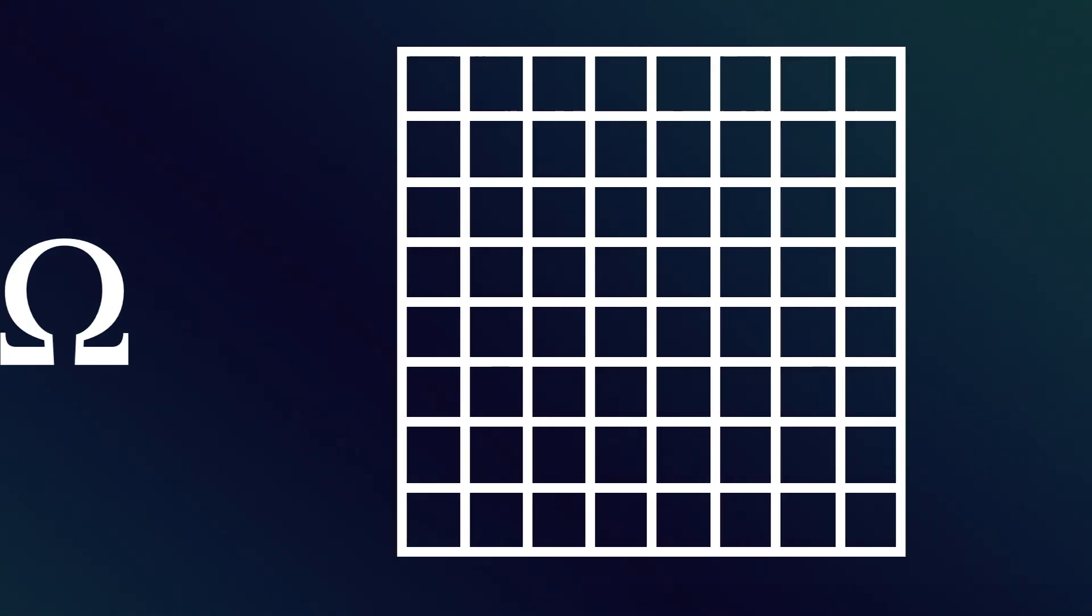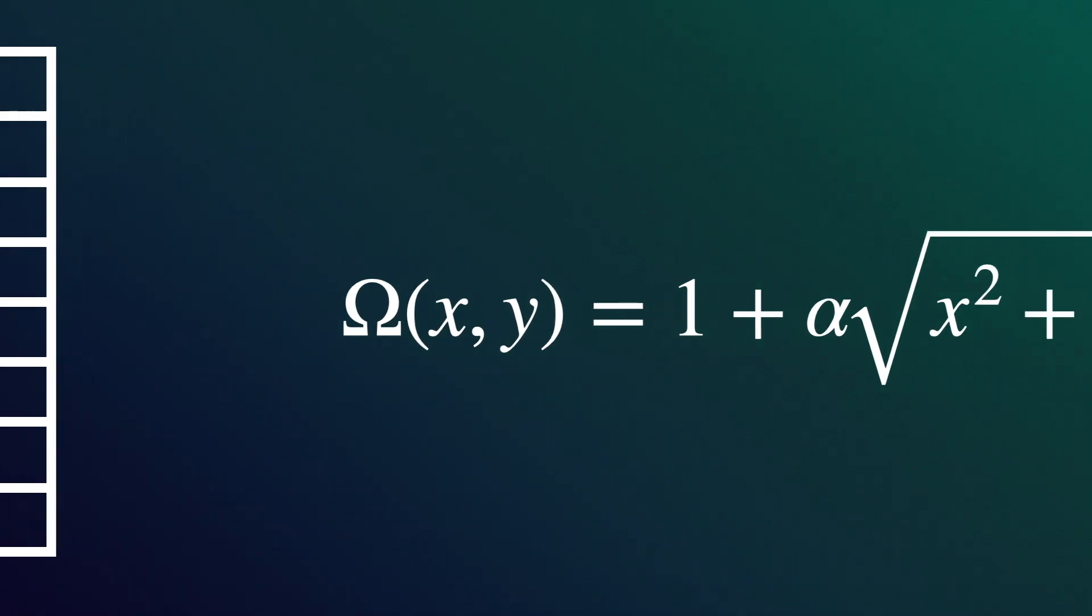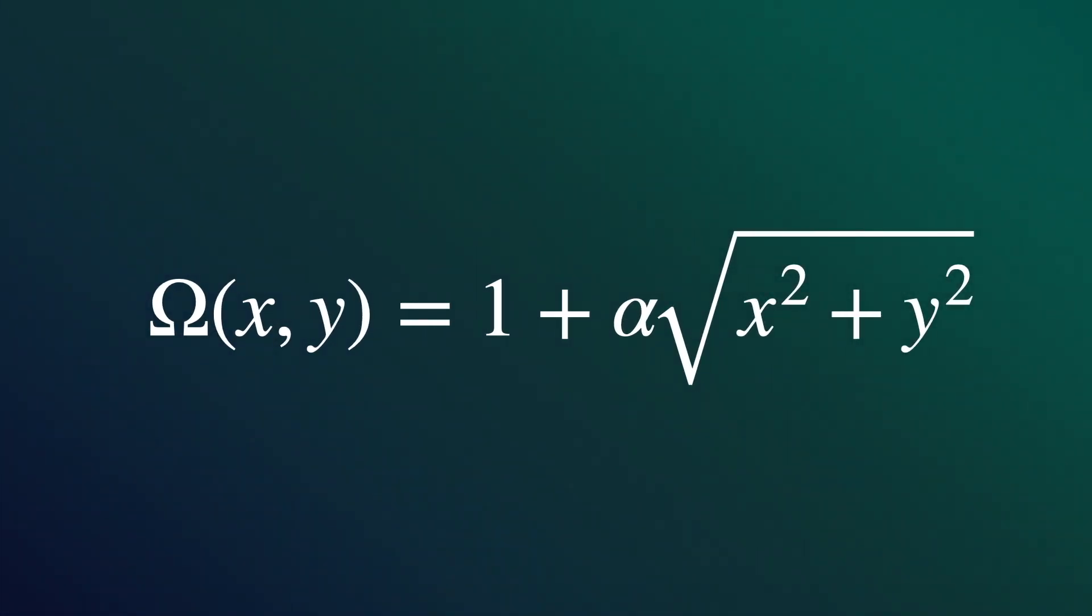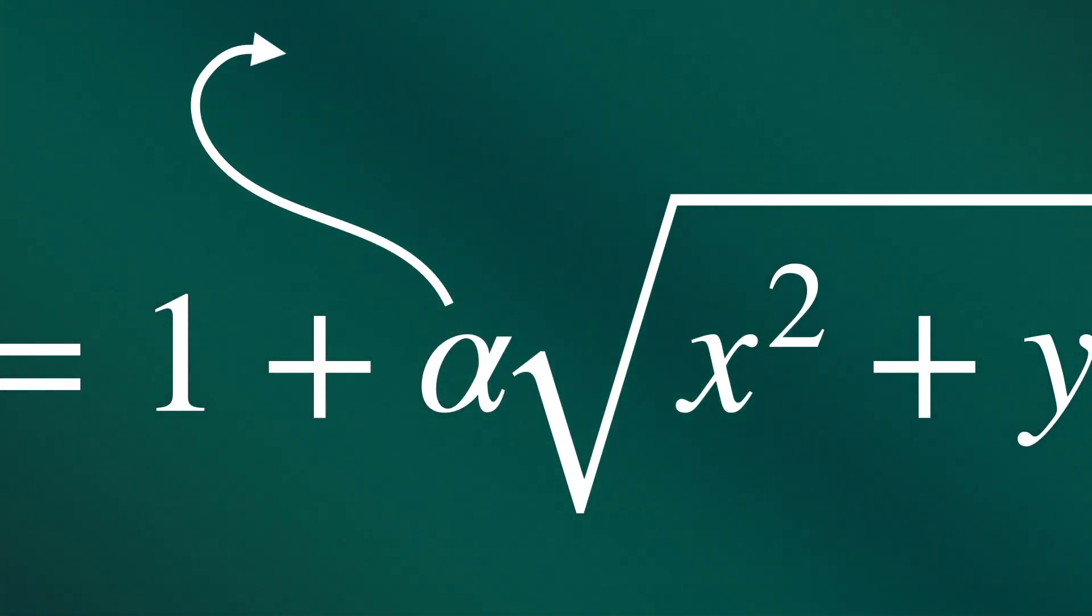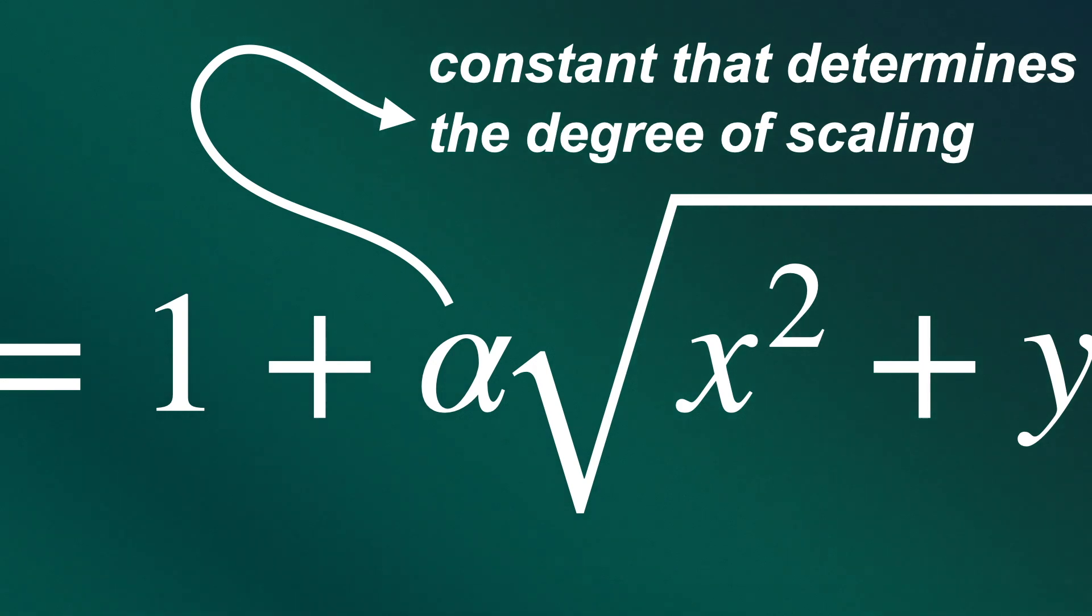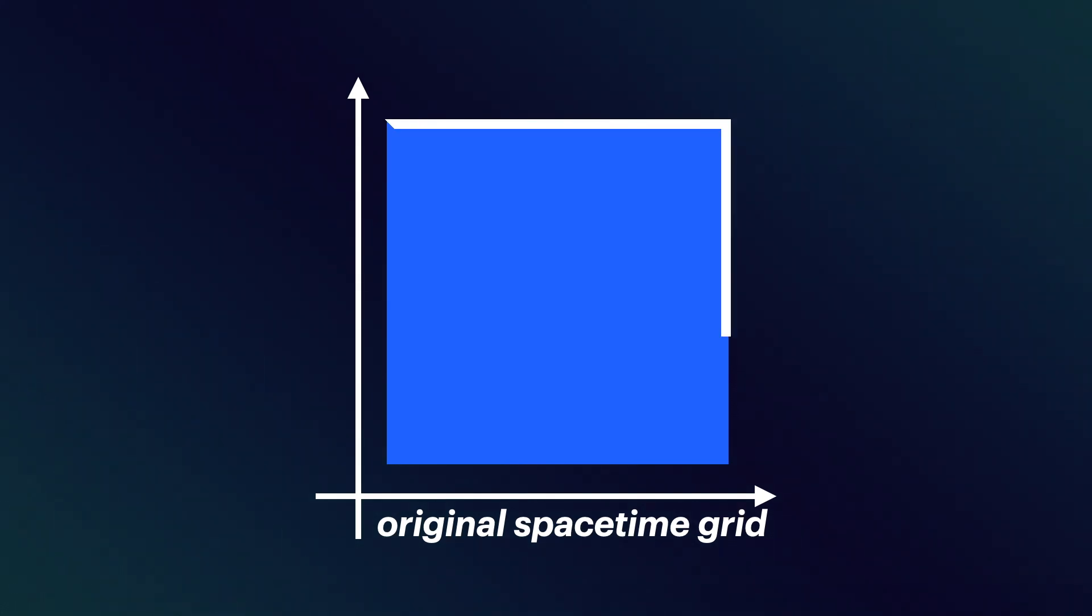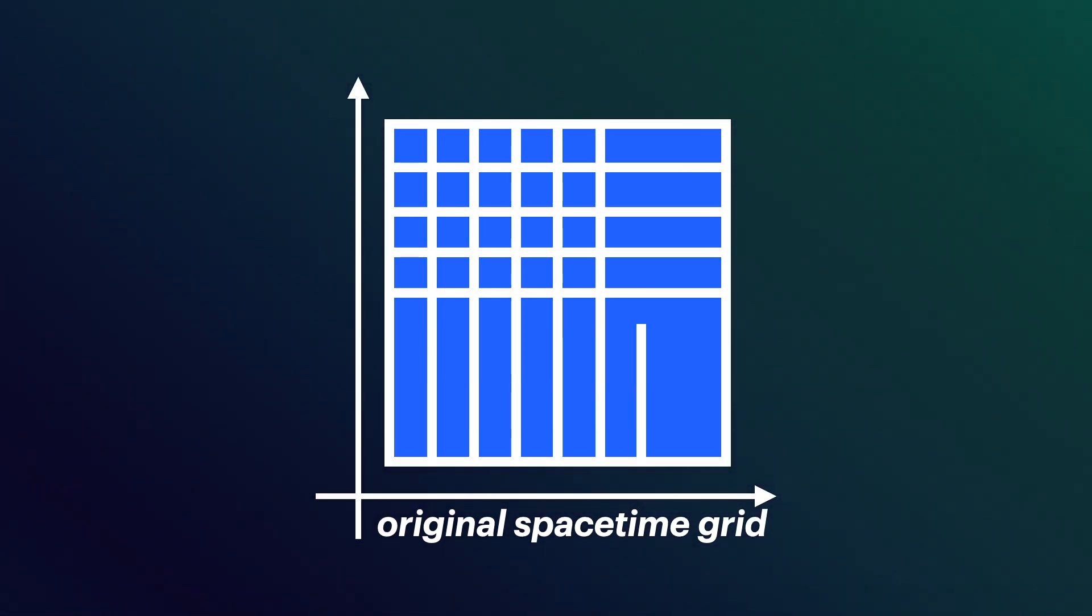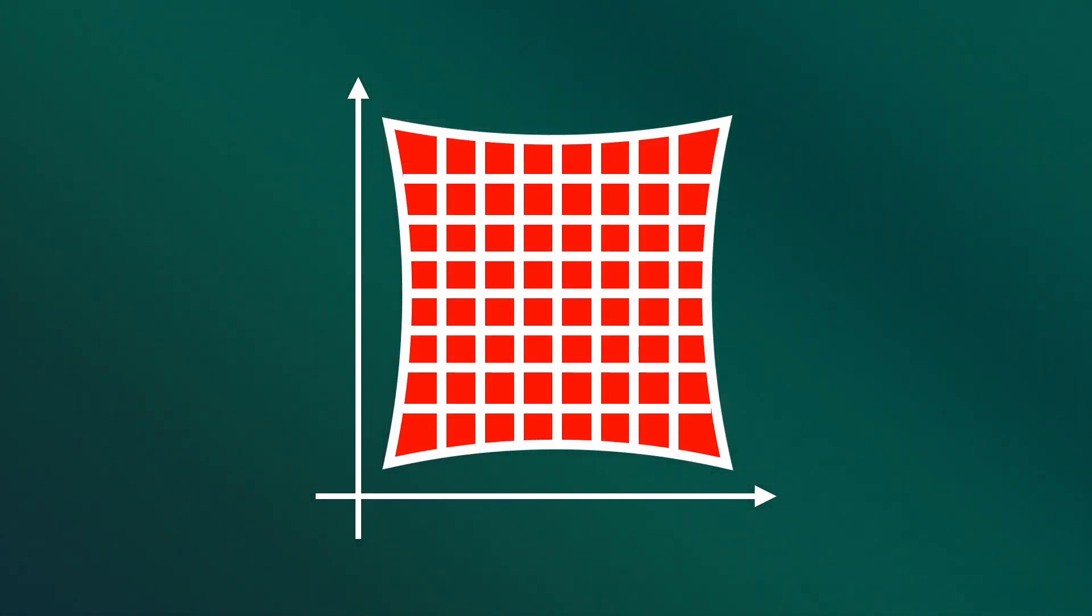However, we can attempt a simplified representation in two-dimensional space. Let's consider a grid representing a small section of space-time, and apply a scaling function omega to transform it, representing the effect of a conformal transformation on the metric tensor. We'll use this simple scaling function, omega(x,y), for this visualization, where alpha is a constant that determines the degree of scaling. The blue square represents a uniform grid in a two-dimensional space-time, similar to a flat space-time in general relativity.